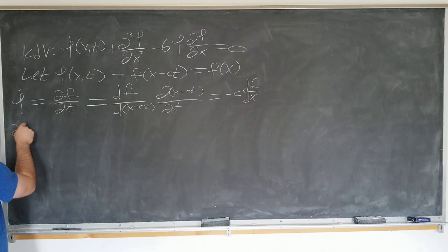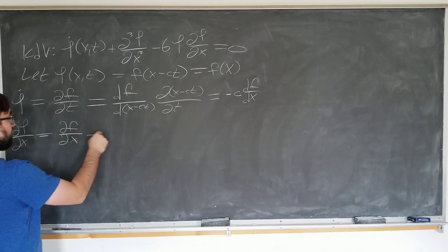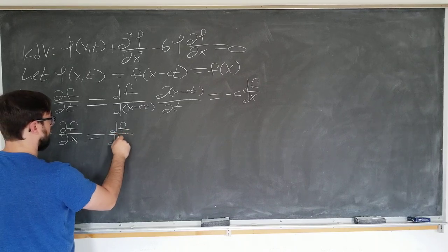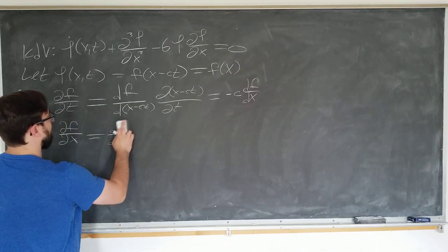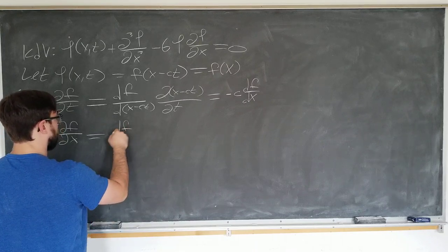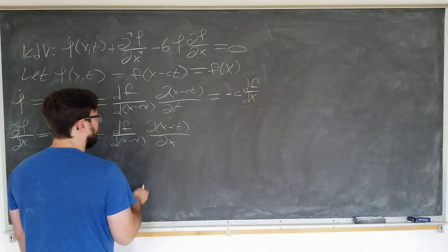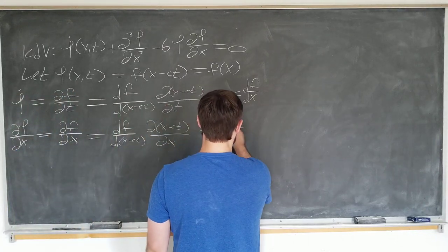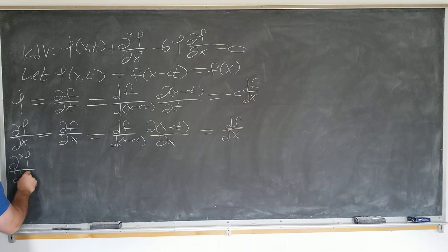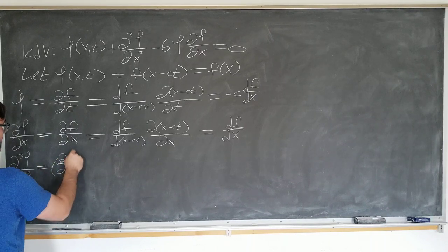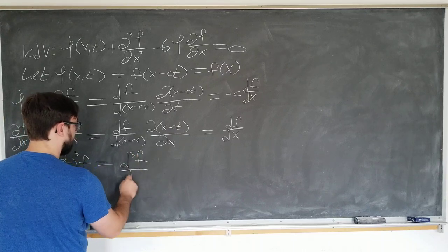We also want to transform the x derivative. So d psi by dx is equal to df by dx, and we use the chain rule again, partial f by partial capital X times partial x minus ct by dx, and this is just one, of course. So we just get df by d capital X. And the cube derivative, similar. So d cubed psi by dx cubed is just going to be partial x cubed acting on f, which was just 1. So this is going to be just d cubed f by dx cubed.